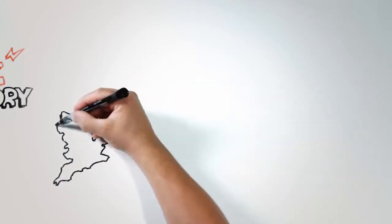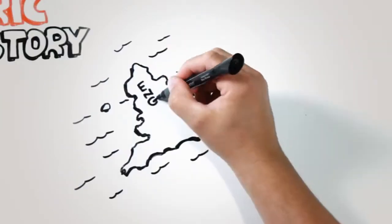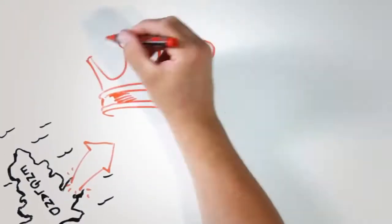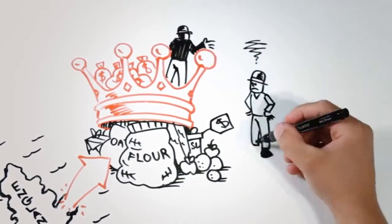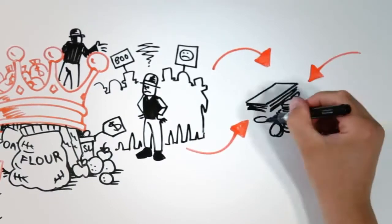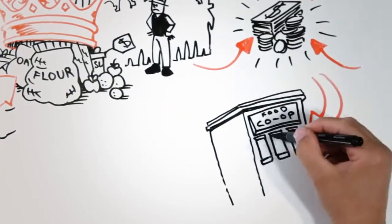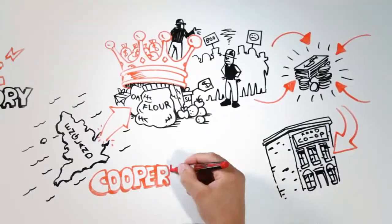Our story starts back in 1844 in not-so-merry England, where a group of weavers fed up with the high price of company store groceries pooled their money to buy their own food, creating a new form of business: the cooperative.